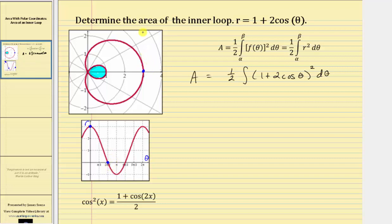So as theta increases, the curve is traced out in this direction. This is the orientation of the curve. And at two thirds pi radians, we are back at the pole, which is this point here.